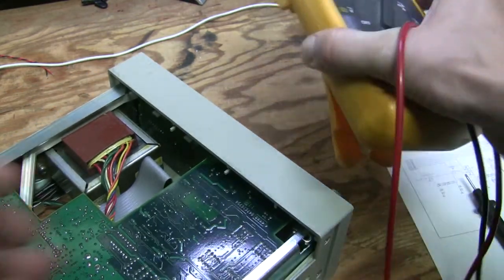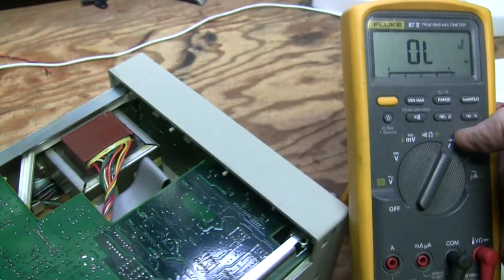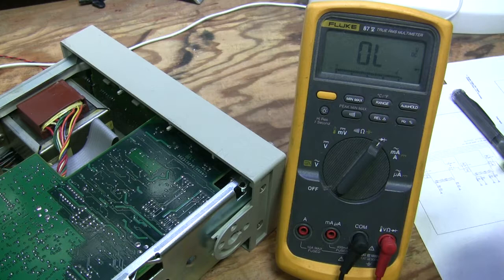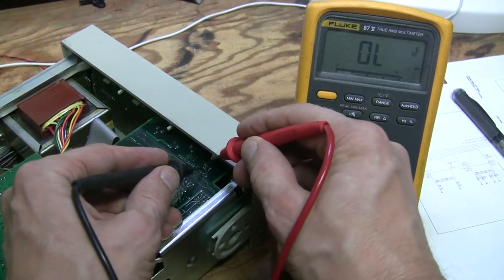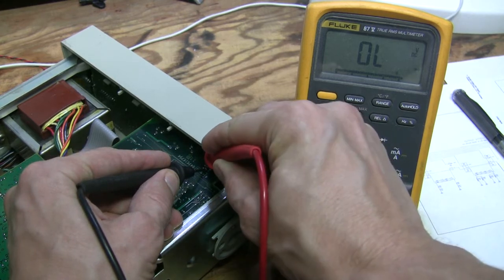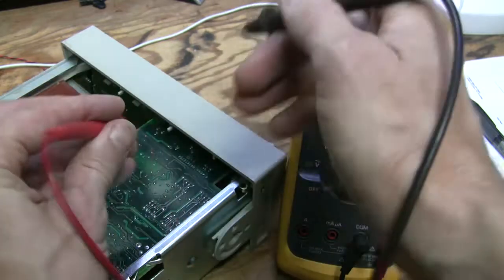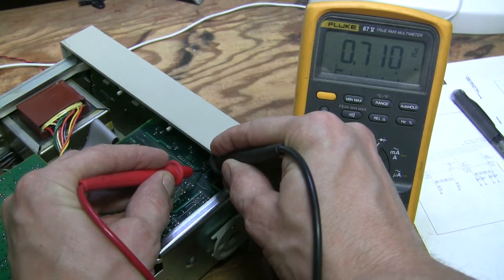So these three pins are for the positive side I believe, and this is the negative side. Let's try. So I set it to diode test mode and these are the bases right here.